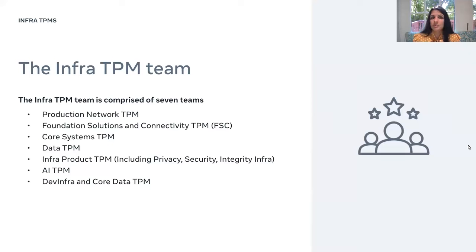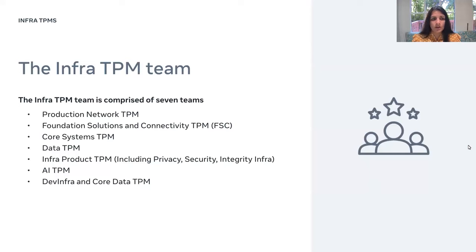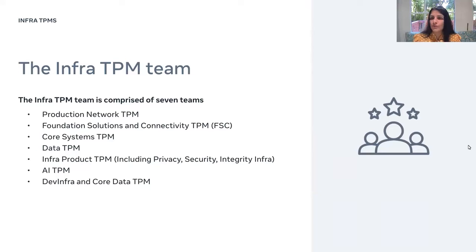The infra TPM team is comprised primarily of seven different sub-teams: Production Network TPM, Foundation Solutions and Connectivity TPM (also called FSC TPMs), Core Systems TPM, Data TPM, Infra Product TPM (which includes Privacy Security Infra), AI TPMs, and Dev Infra and Core Data TPM. There are different openings for each of these sub-teams depending on your area of interest.